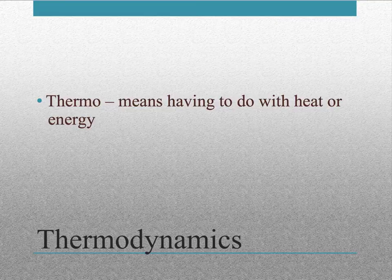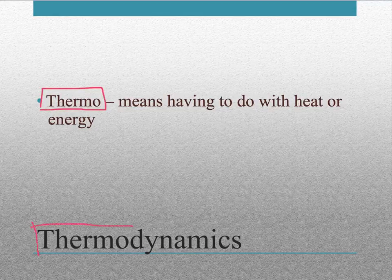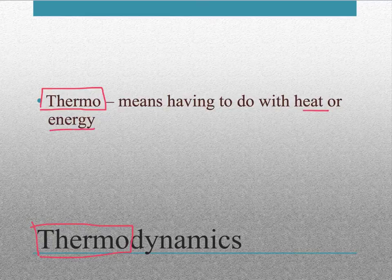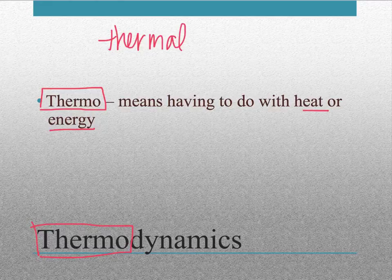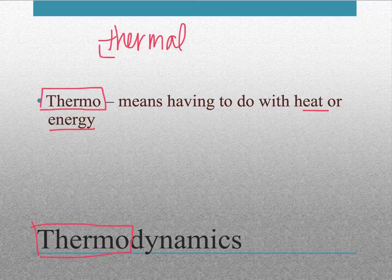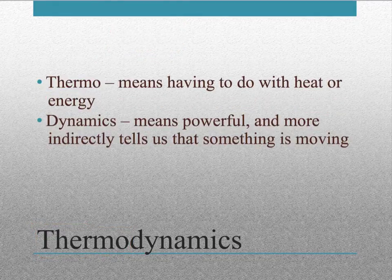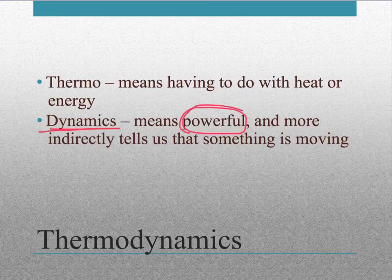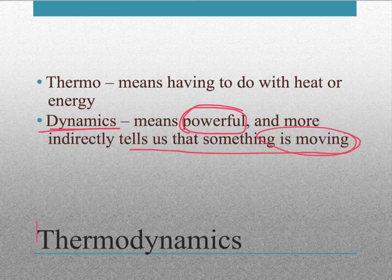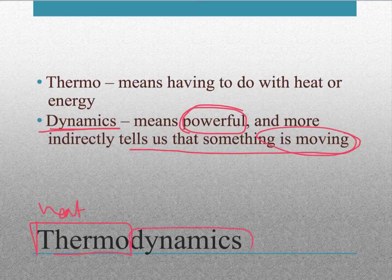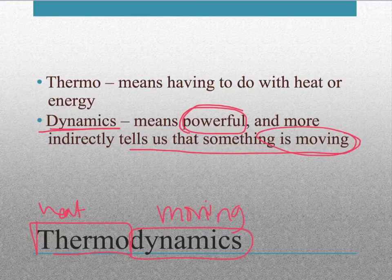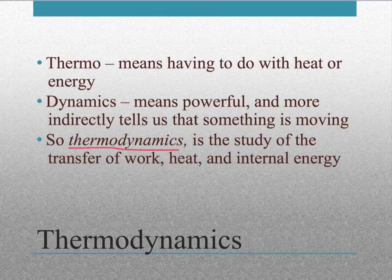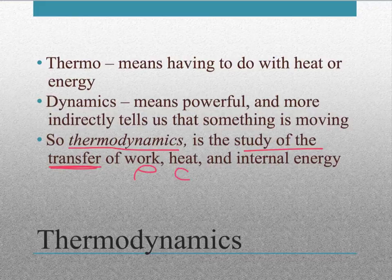Taking a closer look at this word so we can understand it a little bit better, if we look at the first word here, thermo, in thermodynamics, this first part means having to do with heat or with energy. In the last chapter, we used thermal because we talked about thermal conduction and thermal insulators. So this therm part, thermo, thermal, has to do with heat and energy and temperature. The next word, dynamics, tends to have to do with things that are powerful, and often powerful things are moving, so indirectly it tells us that something is moving. So we've got heat or energy, and then we've got a word here that means powerful or moving. And so thermodynamics then, those two words together, is the study of the transfer of work, heat, and internal energy.